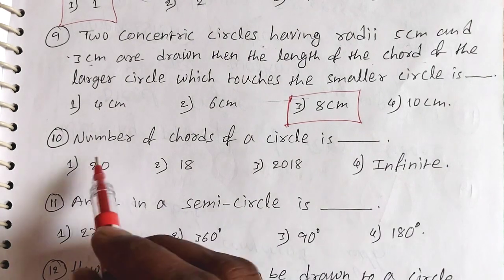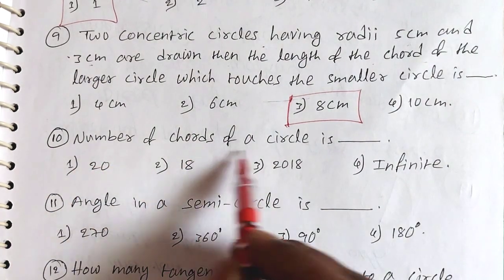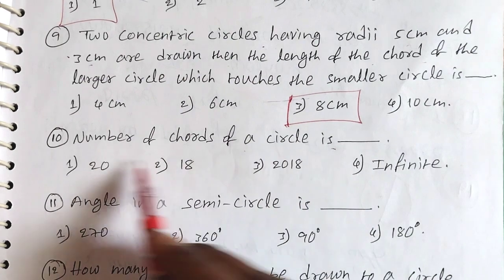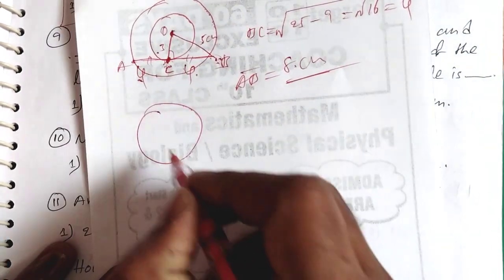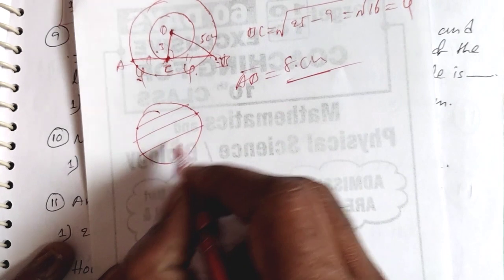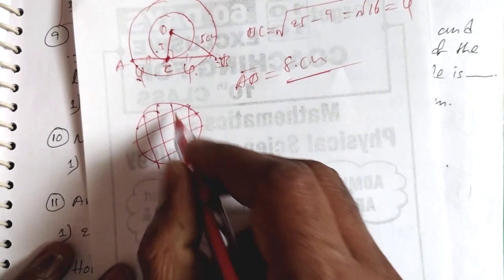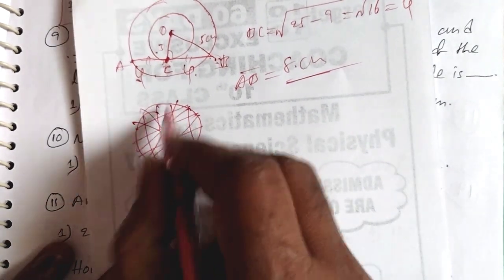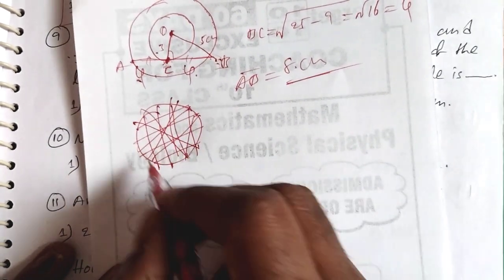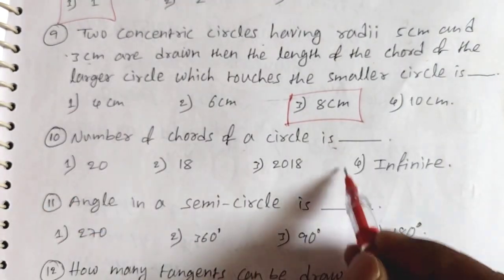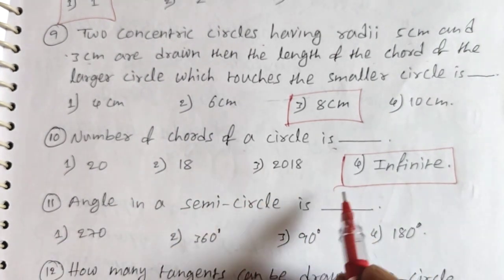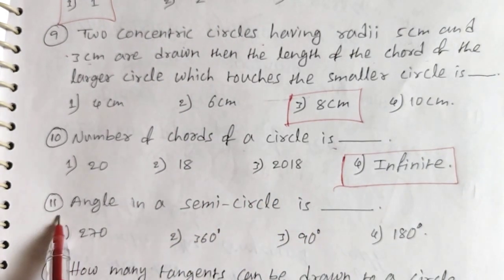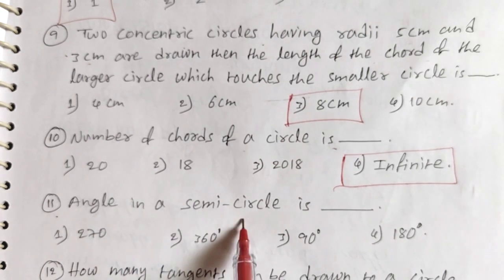Question 10: The number of chords of a circle is what? If you draw any chord, you can draw any number of chords. So the number of chords is infinity. The fourth option, infinity, is the answer.